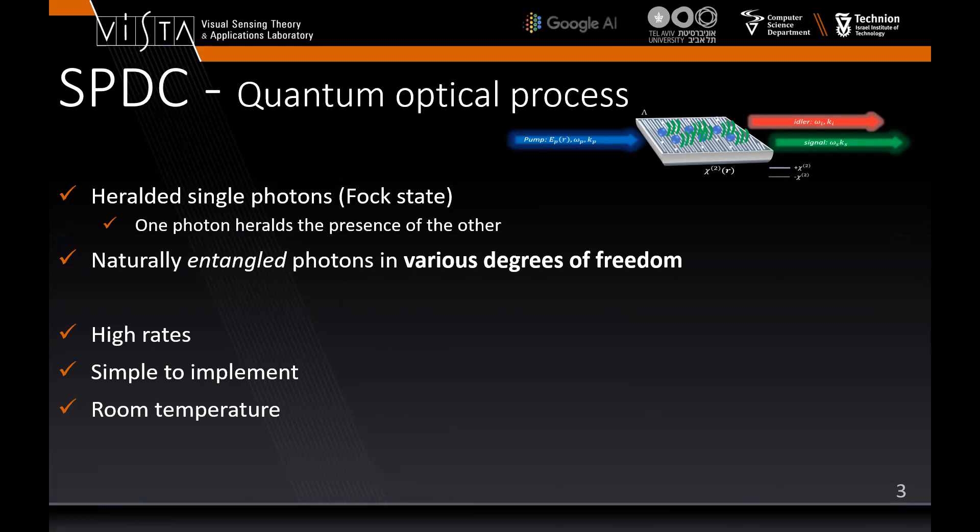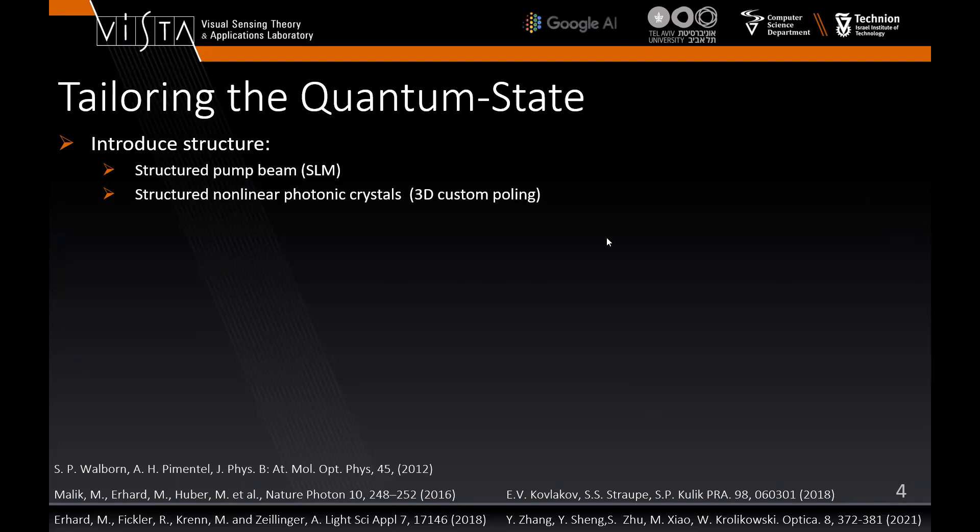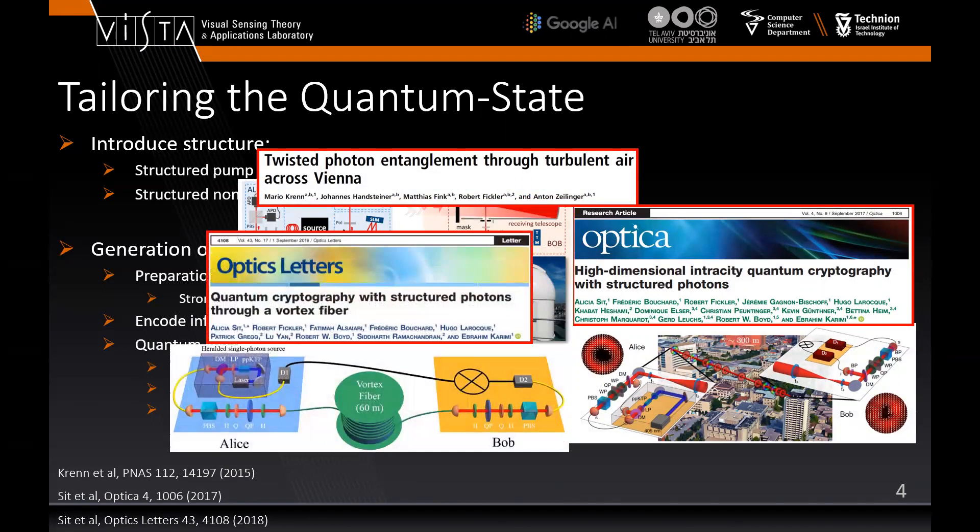The fact that the photons in this process are always created in pairs makes them useful for single photon sources. An even more interesting use is the fact that the photons created are naturally entangled in various degrees of freedom. Furthermore, this process is simple to implement, works at high rates at room temperature with relatively standard equipment, making it a very popular process for creating qubits for quantum applications.